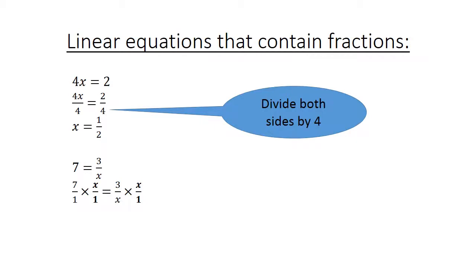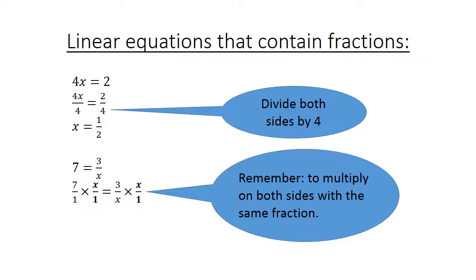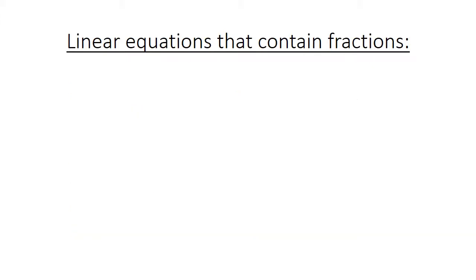And we have: 7 equals 3 over x. We multiply both sides by x over 1, and we get 7x equals 3. Therefore x equals 3 over 7.